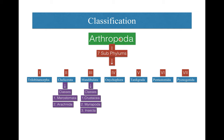First, a quick overview of the classification of Arthropoda. Arthropoda comprises seven subphylums: first Trilobita Morpham, second Chelicerata, third Mandibulata, fourth Onycophora, fifth Tardigrada, sixth Pentastomida, and seventh Pycnogonida. Subphylum 2 Chelicerata comprises two classes: Merostomata and Arachnida. Mandibulata comprises three classes: Crustacea, Myriapoda, and Insecta. Today I will discuss subphylum 3 Mandibulata and its three classes in detail.